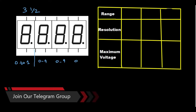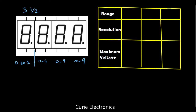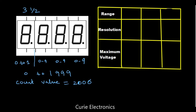Now, what is the maximum count? It can vary from 0 to 1999. So the count value equals 2000. When we added one half digit to it, the count has doubled. Previously, with the three full digit display, our count was 1000. Now, when we added one half digit, the count has doubled.